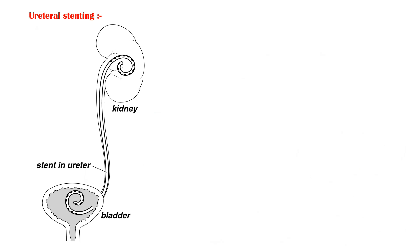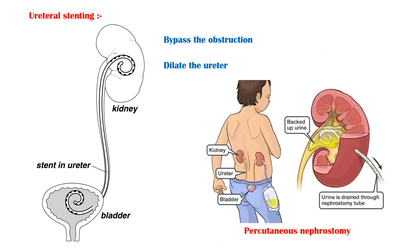Ureteral stenting is used to bypass the obstruction and dilate the ureter, which permits urinary outflow. If stenting fails, percutaneous nephrostomy may be indicated. All these interventions are for the temporary relief of the obstruction. As the definitive treatment option, you should always correct the underlying cause.